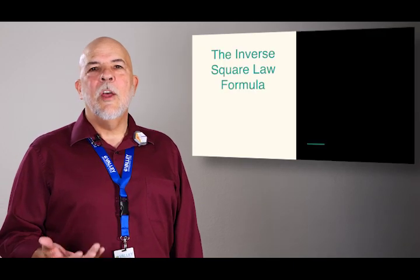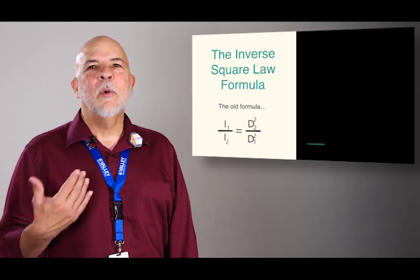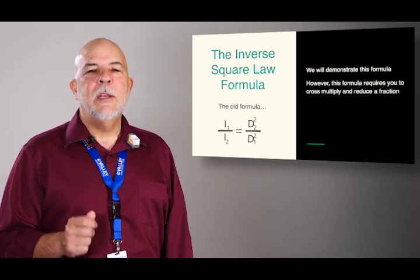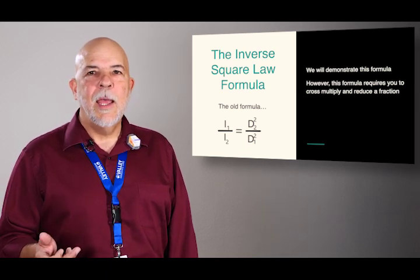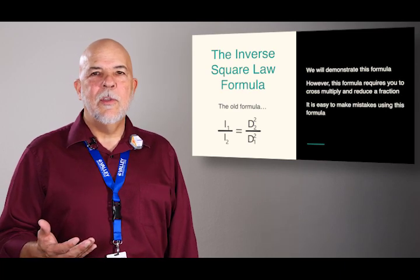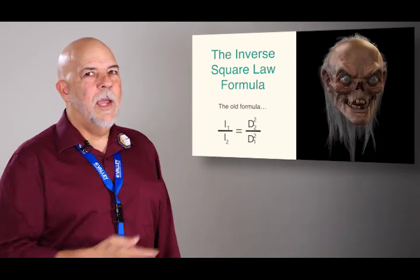So first we're going to look at the old formula. It's really clunky. We're going to demonstrate the formula. However, this formula does cause you to cross multiply or invert and multiply and then reduce a fraction. There's a lot of places for mistakes to happen during this. So again, this is definitely the old way.